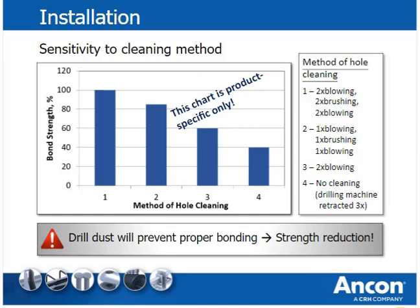The chart shows the capacity of one specific chemical anchor product for different hole cleaning methods. Even small deviations from the procedures shown in the manufacturer's installation instructions can lead to significant capacity reductions. Site studies in the US and Europe have shown that in up to two-thirds of all anchor applications, the installation did not follow all required steps, leaving the anchor with unknown capacity.